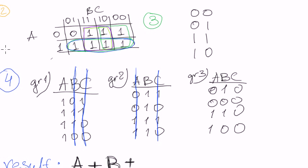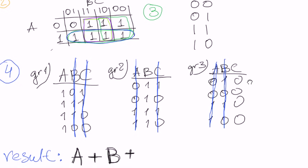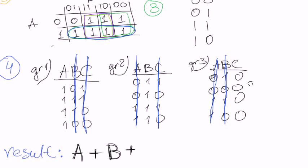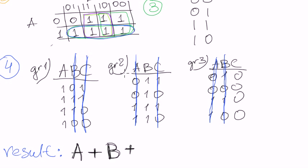And so, again, we see that A changes. That means, it doesn't matter. B changes. That means, it also doesn't matter. And C stays zero. That means, that the C contributes to the value, to the result value. That means, that the result will be A plus B and plus C.